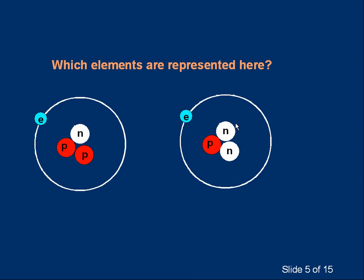Here's a little exercise. Look at the diagrams — which element or elements are represented? The one on the left has two protons, Z equals two, that makes it helium. It doesn't matter that it's only got one electron — it's lost an electron. It doesn't matter it's only got one neutron. It's helium if it's got two protons. The other one has one proton, which makes it hydrogen.